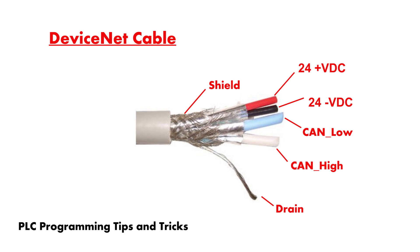As you can see the cross section of the DeviceNet network cable, it has five conductors inside. Black is a common cable and blue is a CAN low cable. Uninsulated cable is a drain cable and we have to earth this cable. The white is a CAN high cable and the red cable is a power supply positive voltage. The red and black cables normally carry 24 volt DC.